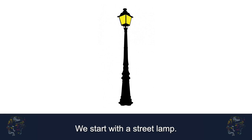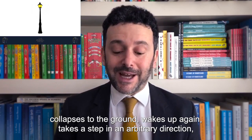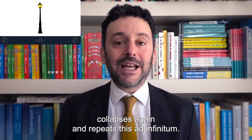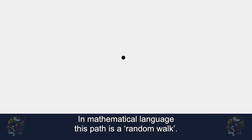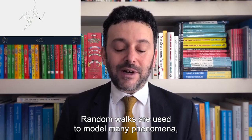We start with a street lamp. Imagine a drunkard sleeping at the base of his lamppost. He wakes up, takes a step in an arbitrary direction, collapses to the ground, wakes up again, takes a step in an arbitrary direction, collapses again, and repeats this ad infinitum. In mathematical language, the path travelled by a drunkard is a random walk — a sequence of steps where each step is in a random direction.